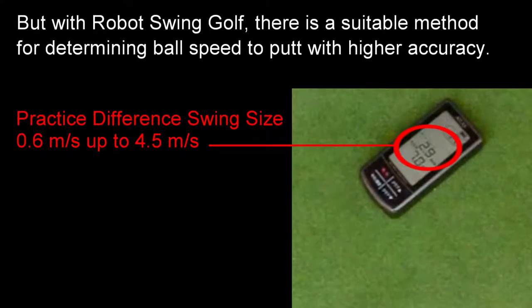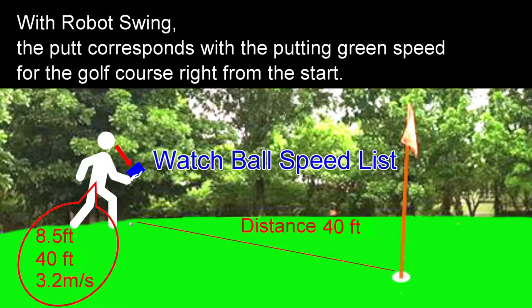But with robot swing golf, there is a suitable method for determining ball speed to putt with higher accuracy. With robot swing, the putt corresponds with the putting green speed for the golf course right from the start.